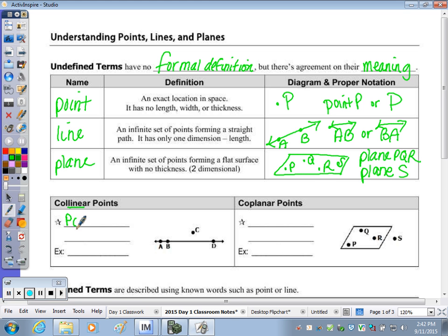With the prefix co-, root word line, collinear points are points that lie on the same line. In our picture to the right, that would be the points A, B, and D. Coplanar points are points that lie in the same plane, so that would be P, Q, and R.